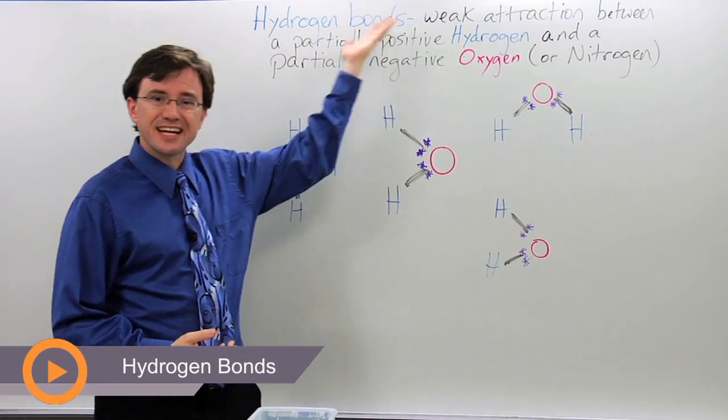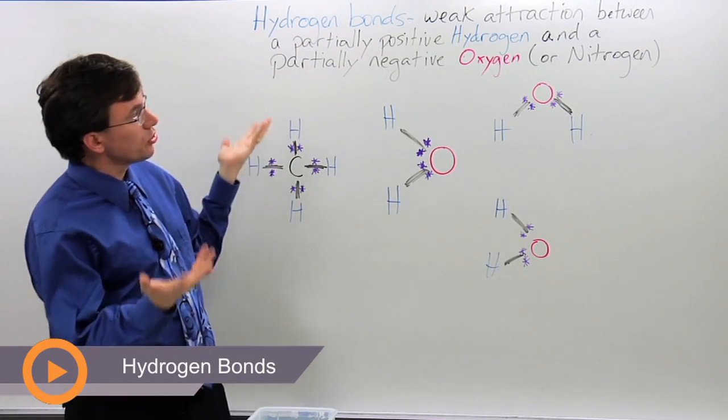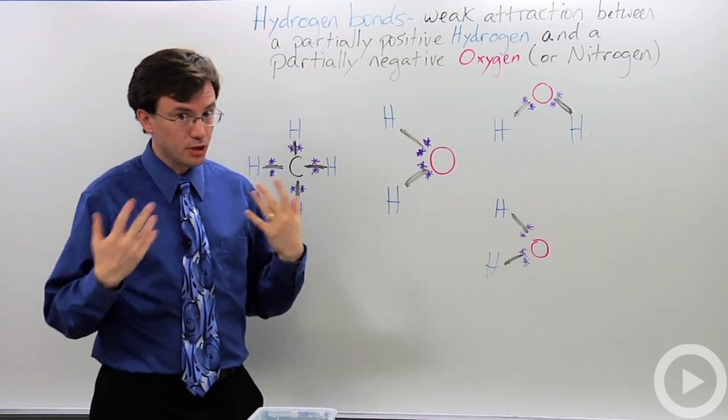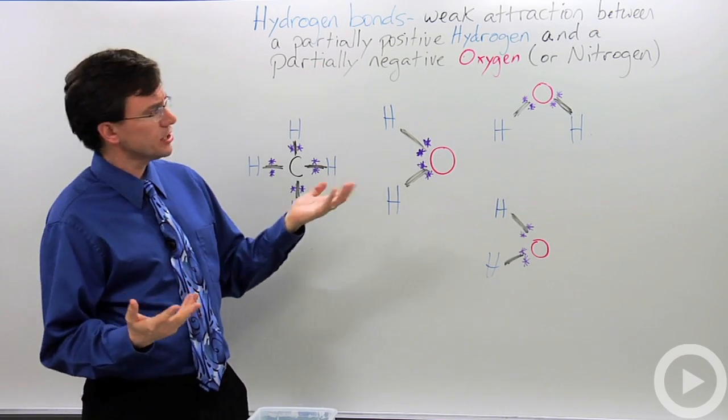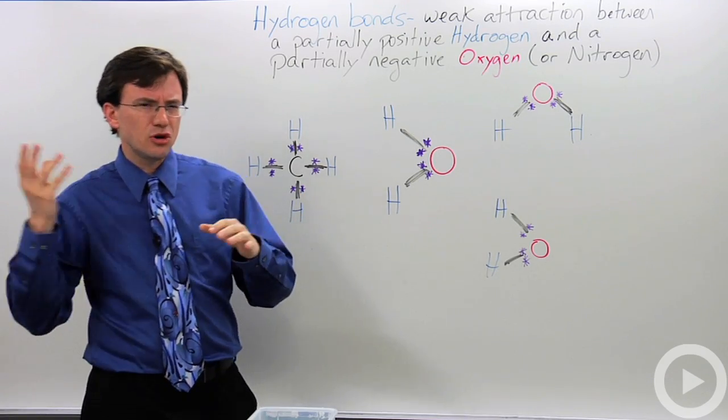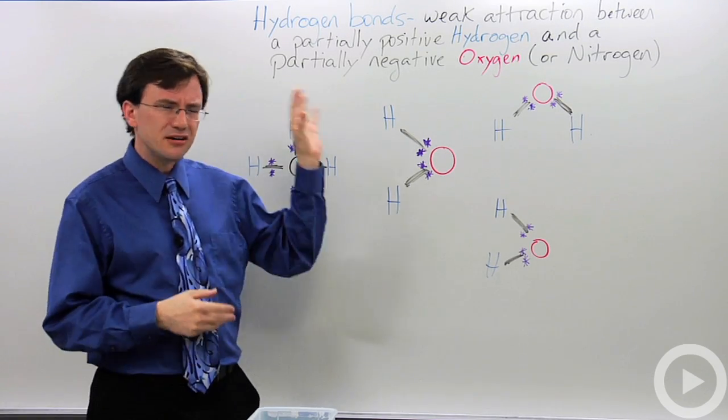You may have read in textbooks this kind of definition for hydrogen bonds, that they're the weak attractions between partially positive hydrogen and partially negative oxygens or nitrogens. You may not really get that, because you know what ionic and covalent bonds are, but how does that fit into this?